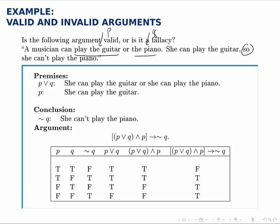So she can play one or the other, she plays one therefore she must not play the other. This is an invalid argument though, proven by the fact that the last column is not all true.